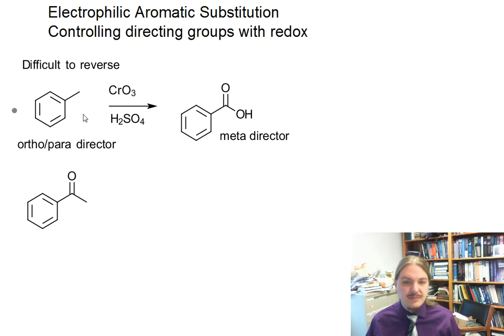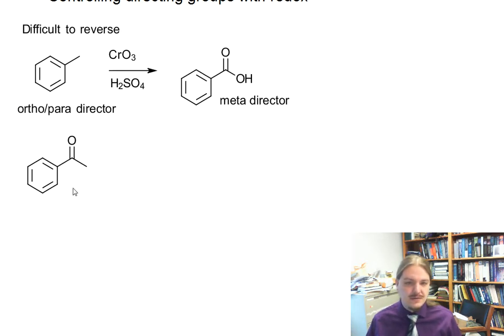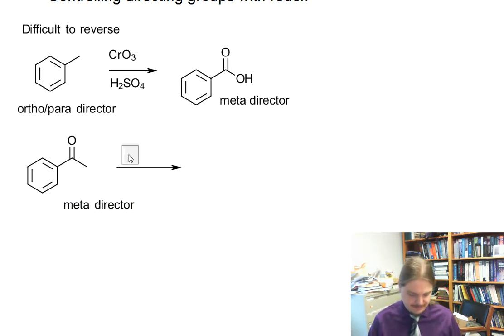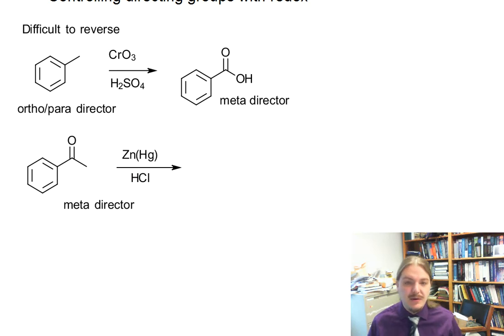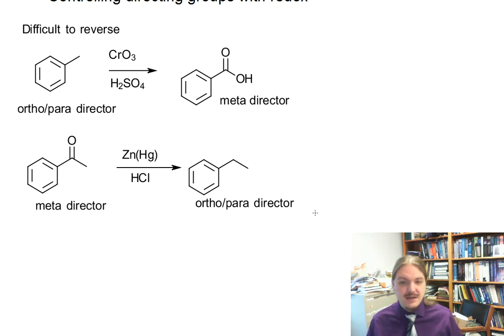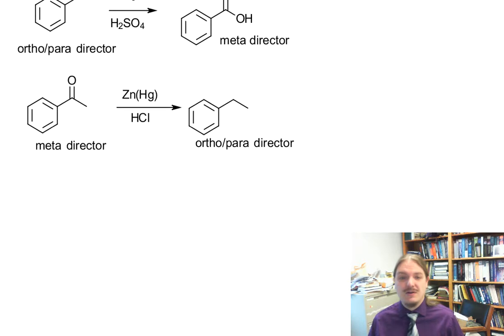As another example, ketones and aldehydes, which are meta-directors, can be converted into alkyl groups through the Clemmensen reduction, using zinc-mercury amalgam and hydrochloric acid, giving you an alkyl group, which is an ortho-para director. Again, this can be reversed, but it can't be done in one step — you have to do something like radical halogenation, substitution with an alcohol, and oxidation.